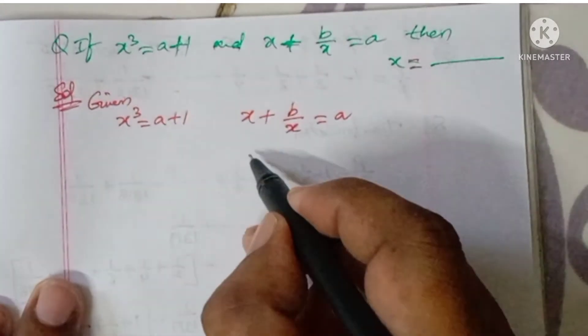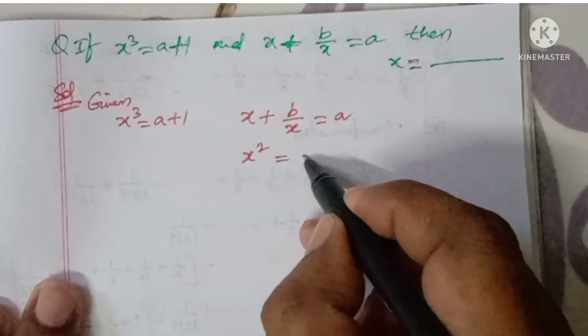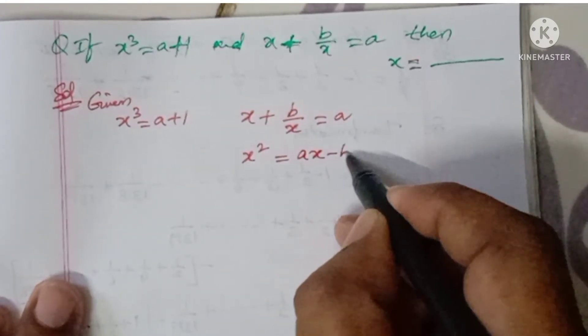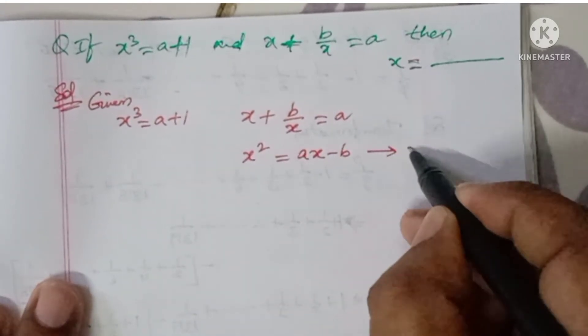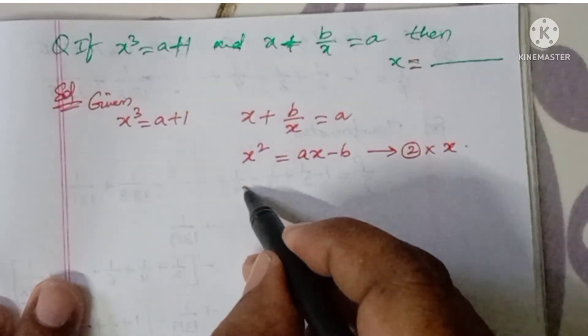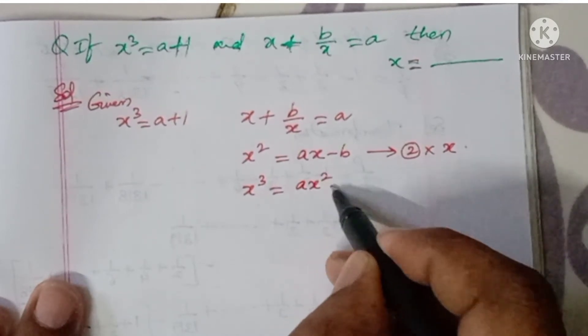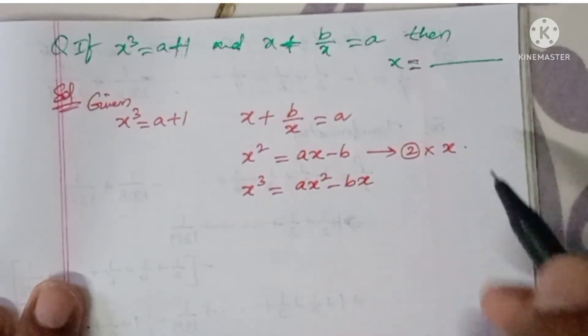So if you take LCM, x² is equal to ax - b. This is the second one, multiply with x. x³ is equal to ax² - bx.